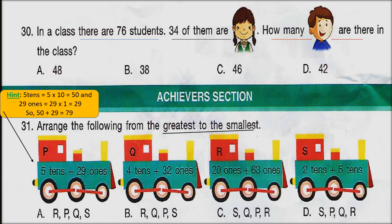Question number 30: in a class there are 76 students, 34 of them are girls. How many boys are there in the class? Total students are 76 and girls are 34 — calculate the number of boys in the class.